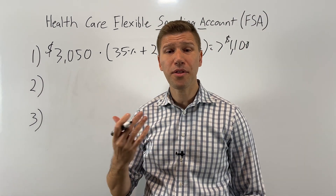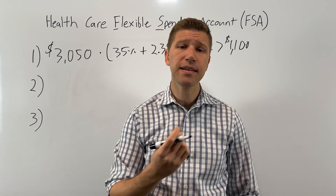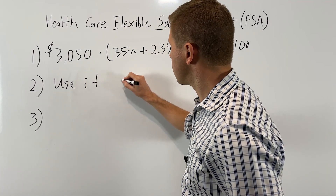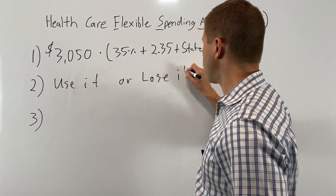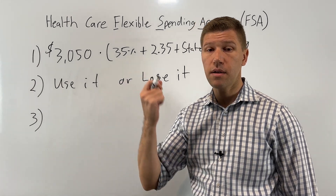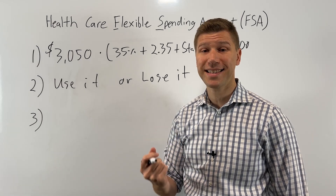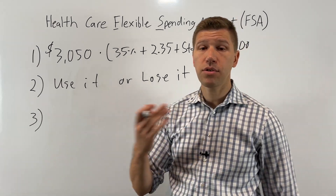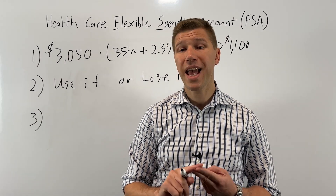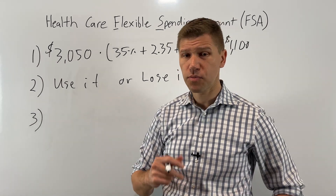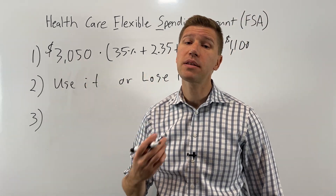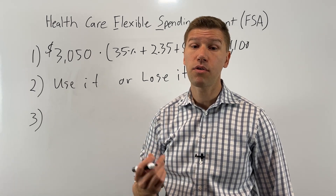Now let's talk about the risk. With an FSA it is a use-it-or-lose-it account, so you do not want to overfund this account. The list of things that can be submitted for reimbursement is quite extensive. In addition to healthcare expenses, you can also submit over-the-counter medication and prescription medication, as well as dental and vision expenses. It's pretty easy to get to this $3,050 limit, especially if you have a family, but it's still important to be cautious that you don't overfund it.